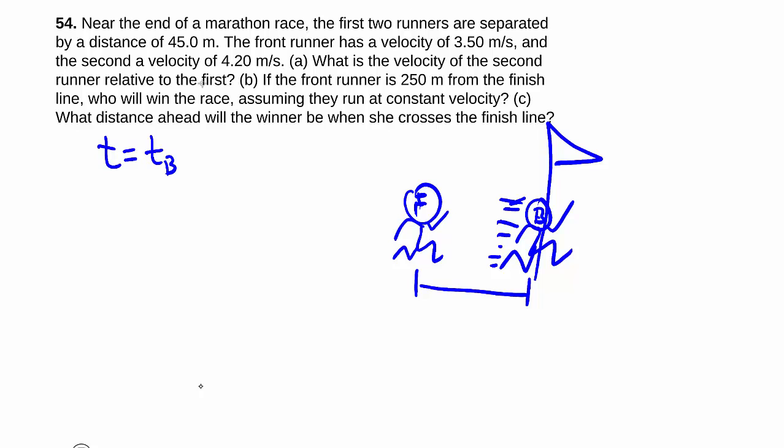We can actually employ relative velocity because the answer is basically what is the position of the back runner according to the front runner at this time, right? Because if we keep on sticking the reference frame on the front runner, this is just the back runner's position.